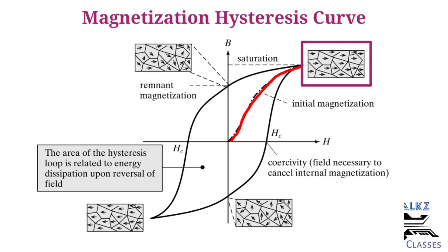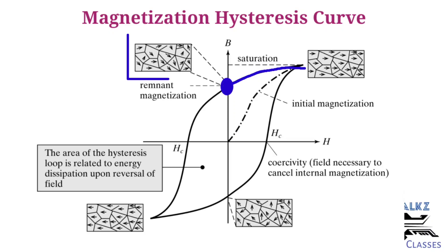What will happen if you withdraw the external magnetic force? When you cut the external magnetic force, demagnetization begins. But H becomes zero. However, some of the flux lines remain retained in the material. Even though H is zero, there will still be a capital B — some amount of magnetic flux lines will remain. This is called remnant magnetization. To achieve complete demagnetization, further action is needed.